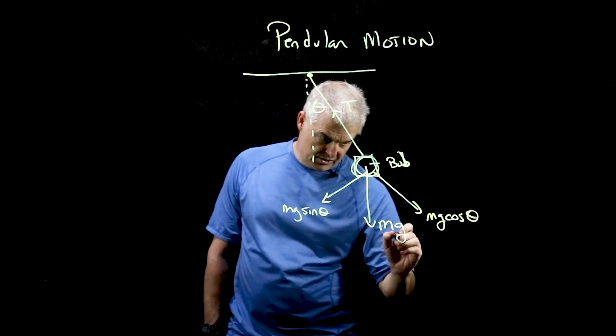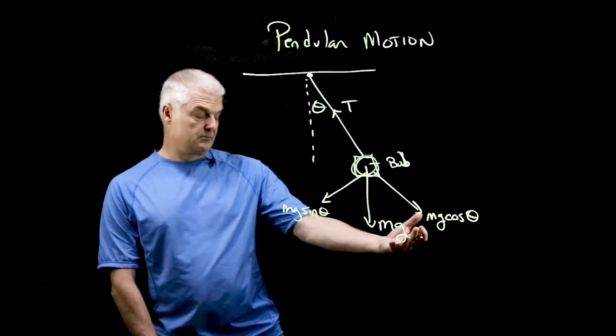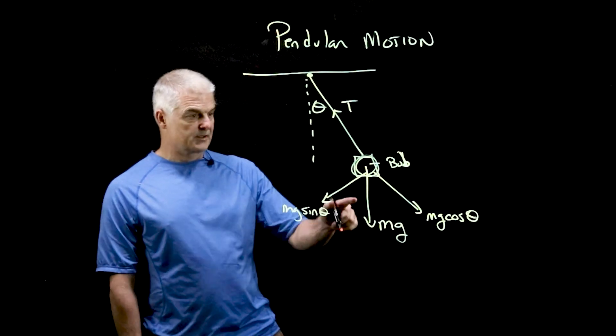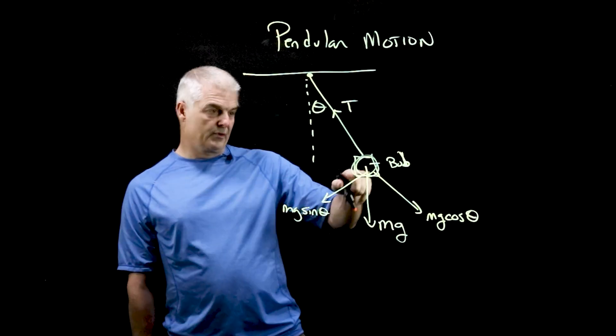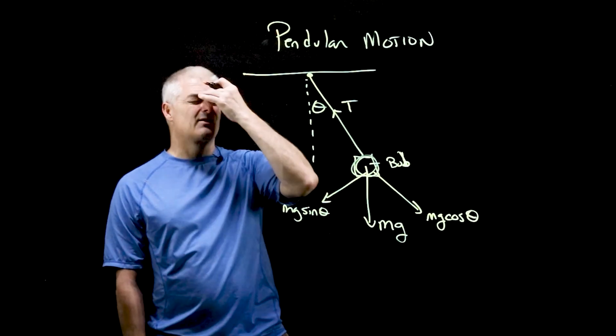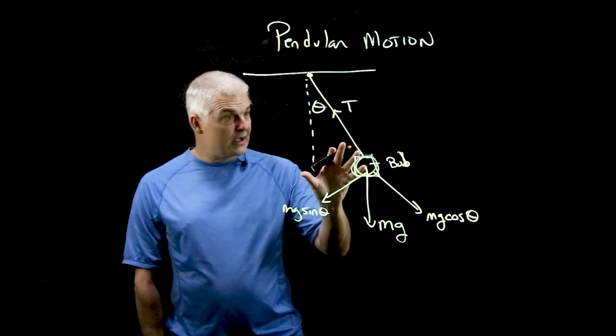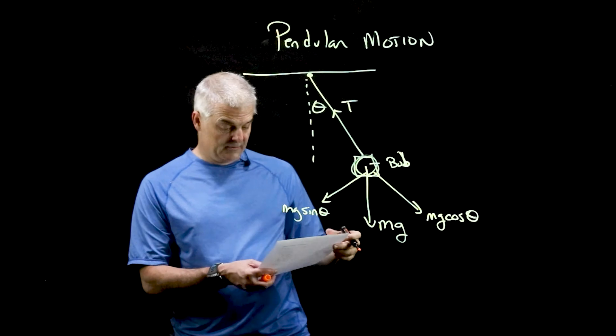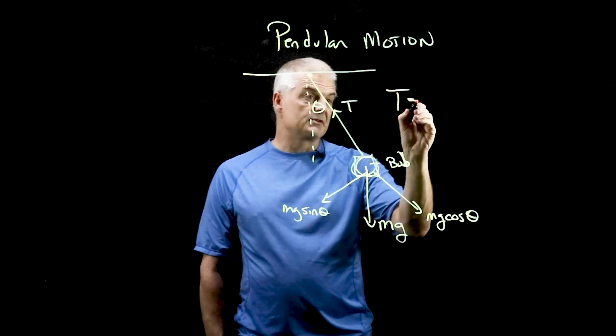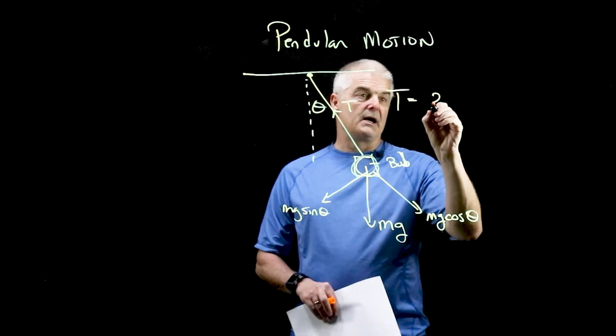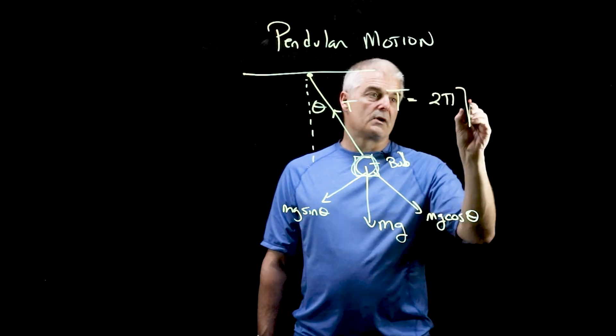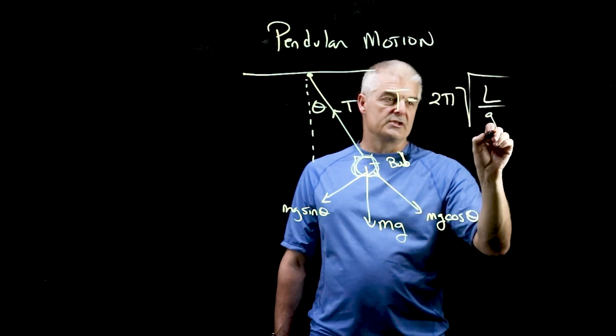F equals mg, where g is the acceleration of gravity on the planet that you happen to be on when you're doing this. And, of course, it's going to go back and forth and back and forth. So that's the diagram, but what does it tell us? And when we measure the period of the pendulum, it turns out that the period, t, remember we talked about t in the previous video, is equal to 2π times the square root of L over g.